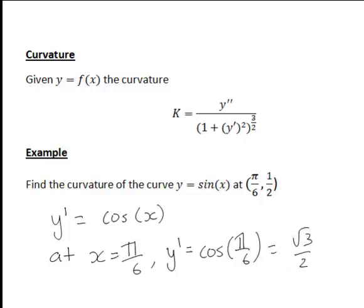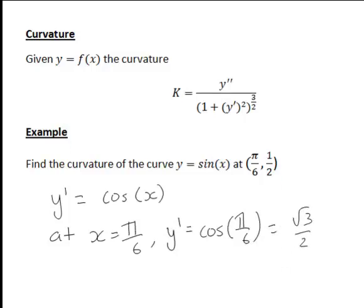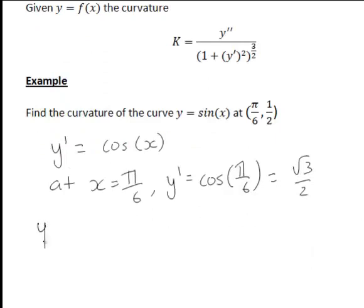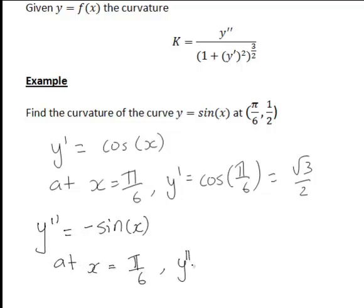Now working out the second derivative: differentiating cos x gives us negative sin x. At x equal to π/6, the second derivative of y with respect to x is therefore negative sin(π/6), which is equal to negative 1/2.